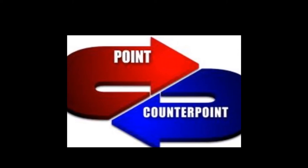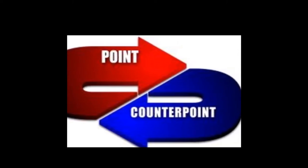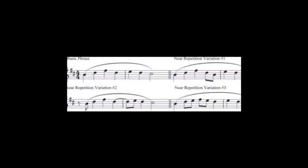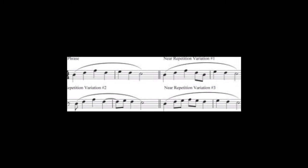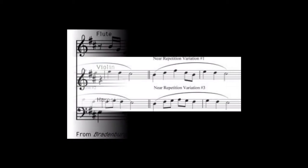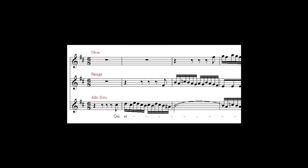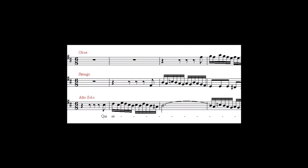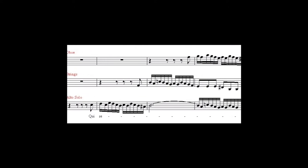Counterpoint is the relationship between many voices that depend on each other but are still independent in their rhythm and contouring. The Renaissance is described as the golden age of counterpoint. A contrapuntal technique that appeared during the Renaissance was imitation — when a musical unit is repeated in a different voice.